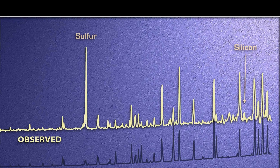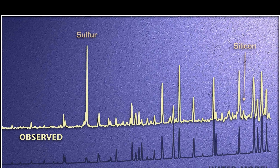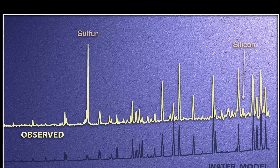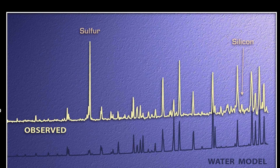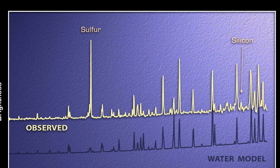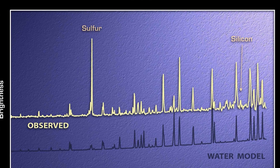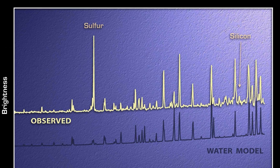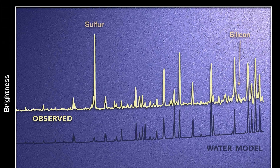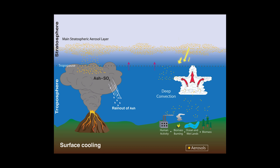Everything in this world has a spectral signature, and so by combining different wavelengths of light, you can ascertain the presence of a certain compound, element, or aerosol based on their spectral signature.